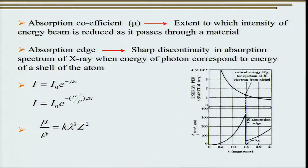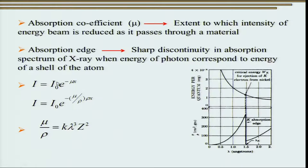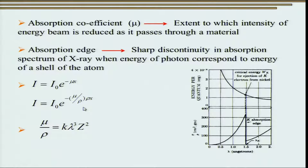The absorption edge is a sharp discontinuity in the absorption spectrum of X-rays when the energy of a photon corresponds to the energy of a shell of the atom. Mathematically, if the incident beam of intensity I₀ passes through a material of thickness x, the attenuation is e^(−μx), where μ is the absorption coefficient. Therefore, the transmitted intensity is I = I₀e^(−μx). Incorporating the density of the material, we get I = I₀e^(−(μ/ρ)·ρx). This is important when considering mixtures, allowing a weighted average of absorption coefficient and density.